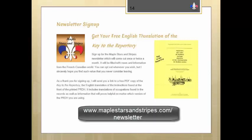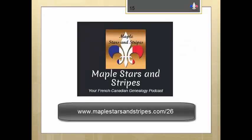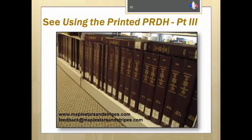Don't forget to go to maplestarsandstripes.com/newsletter to get your copy of the Key to the Repertory, the English translation of the instructions for how to use the PRDH. The key and these videos should have you whipping through the printed PRDH in no time. To learn more about all three PRDH formats, go to my podcast and show notes for the PRDH episode at maplestarsandstripes.com/26. In part three of these videos, we'll look at how to read entries for baptisms, marriages, and burials. Please join us for part three of using the printed PRDH for your French-Canadian research.